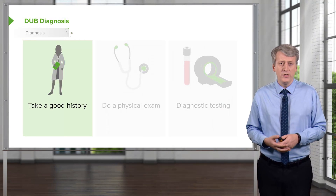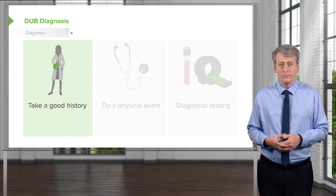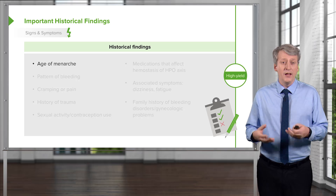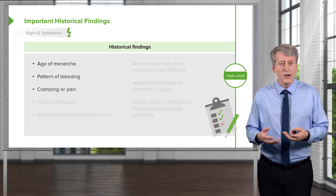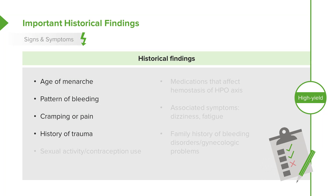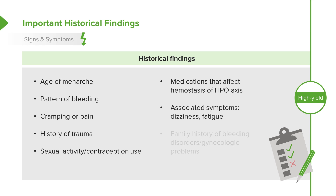When we see a patient with DUB, we want to take a good history. In particular, we want to ask about the age of menarche, what sort of pattern of bleeding they're having — is it menorrhagia or menometrorrhagia — whether they have cramping or pain. We need to ask about a history of trauma, whether they're having sex, and whether they're using contraception. We also have to ask if they're on any medications that might affect hemostasis or the HPO axis. We need to ask about associated symptoms to assess severity of bleeding — are they anemic, do they have dizziness or fatigue? Finally, it's useful to ask if there's a family history of bleeding disorders or other gynecologic problems that might be contributing to this patient's condition.